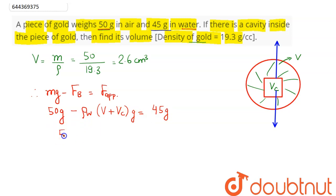Now density of water is equal to 1 gram per cubic centimeter, and we have calculated V as 2.6. Hence, the volume of the cavity comes as 5 minus 2.6, which equals 2.4 cubic centimeters. This is the volume being asked in the question.